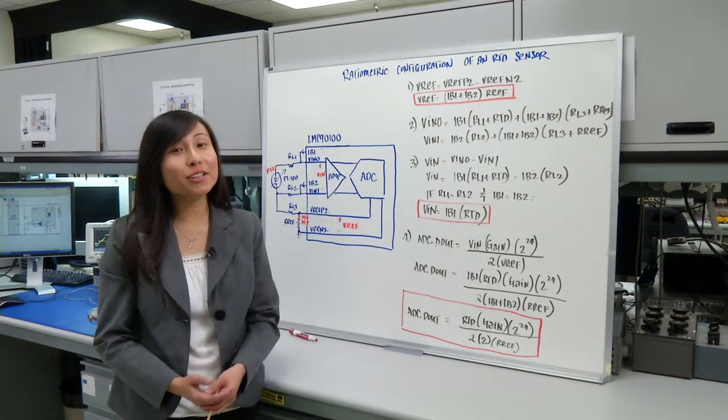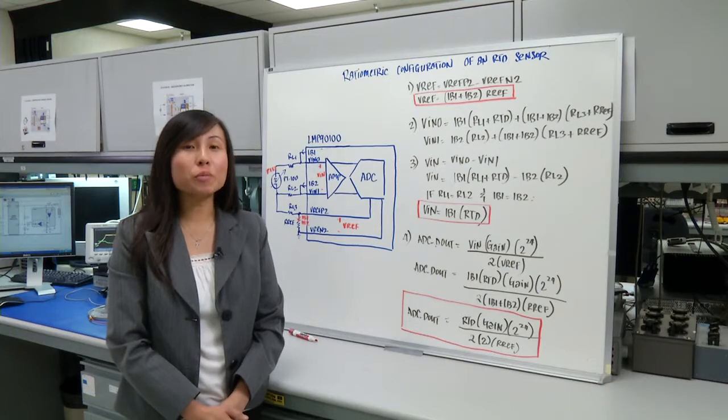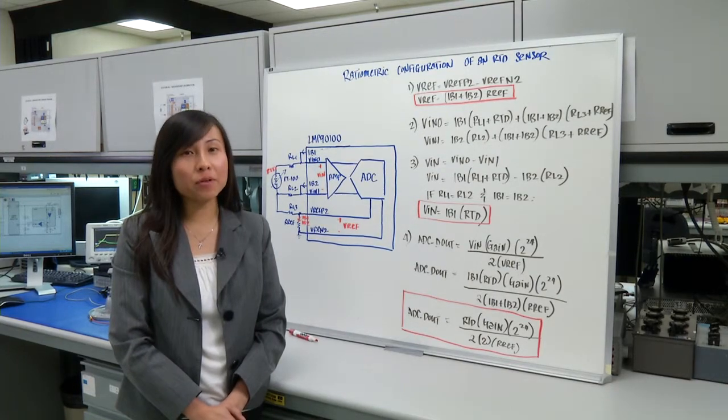So the challenge here is what is a ratio metric configuration and how you can use it to increase the performance of your sensor signal path. So let's take a look.